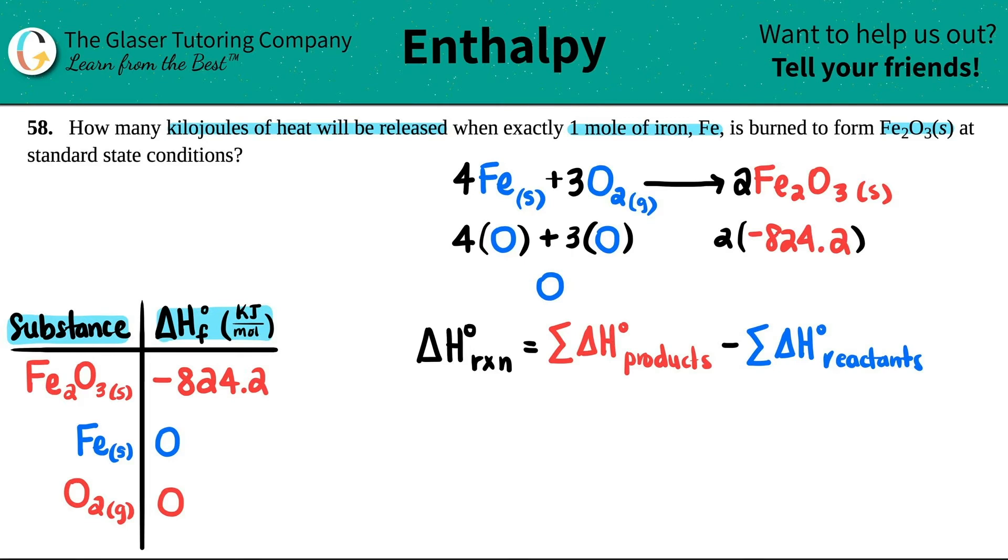Now I'm ready to figure out my answer. The delta H for the reaction would be the sum of the products, which is negative 1648.4, minus zero. Anything minus zero is just itself, so this is now negative 1648.4 kilojoules per mole.